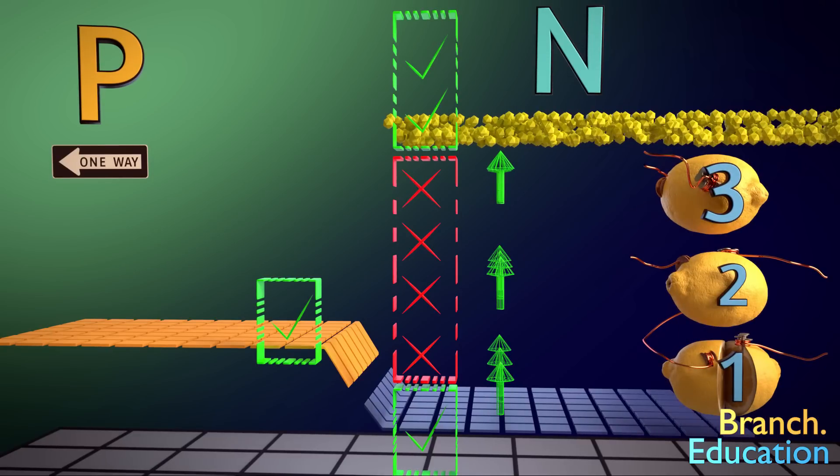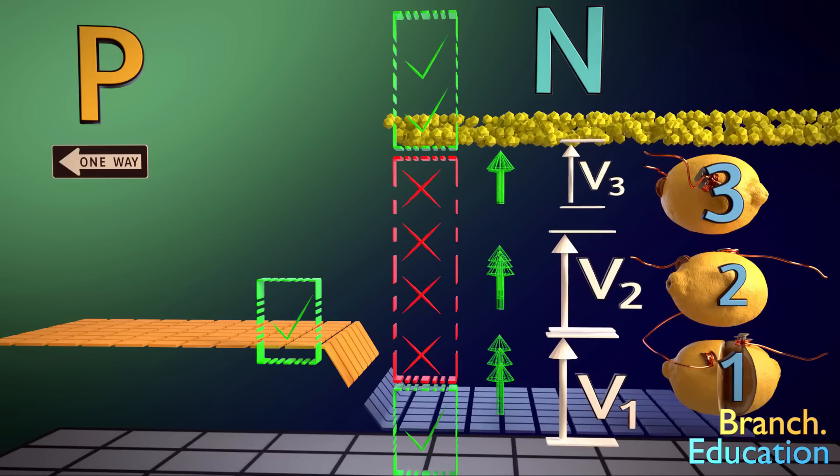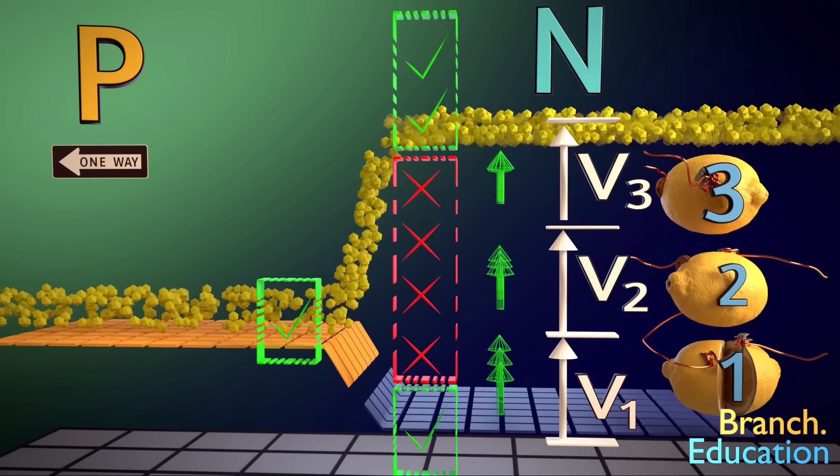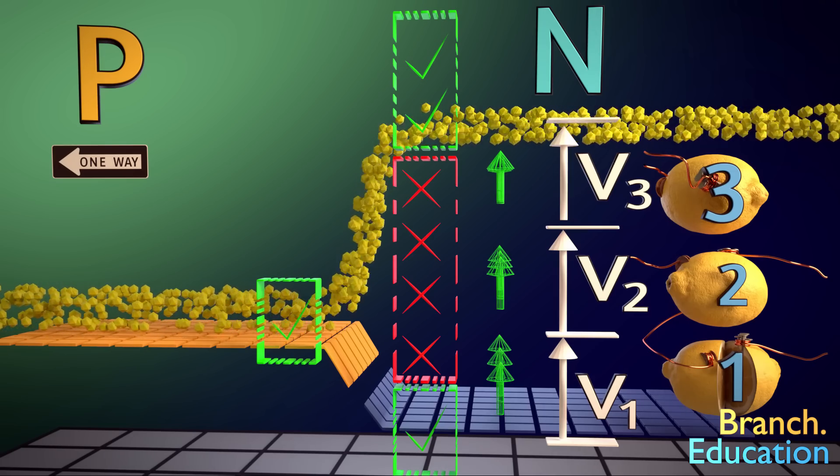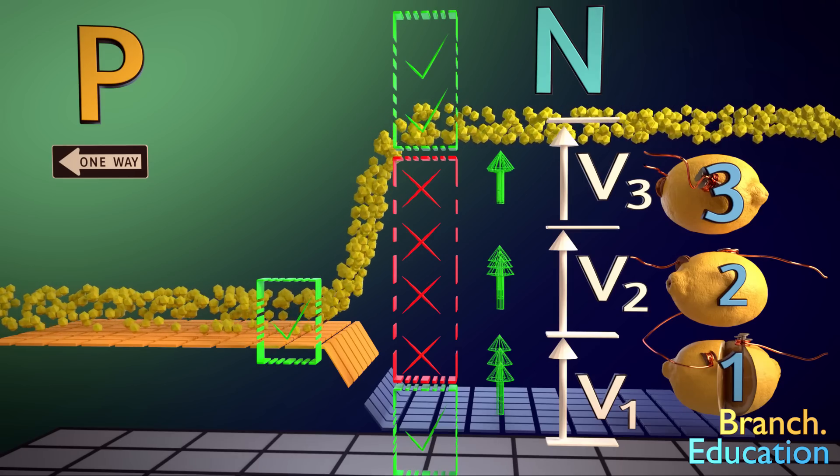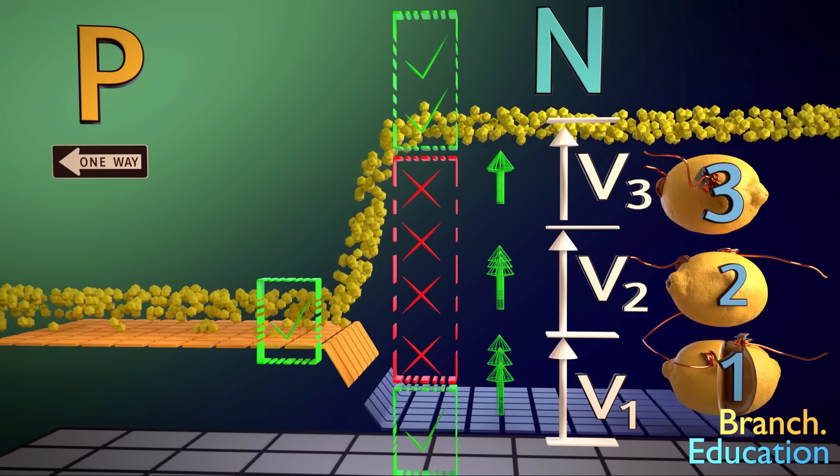And that's why three lemon batteries in series are required. Each lemon battery has the potential to raise the electron a certain height, and it takes three lemon batteries to get to the height, or energy level, that is acceptable to material N. Now that the electrons are at a higher energy level, they can flow from the N side to the P side and make their way through the copper and to the hydrogen ions in the lemon.